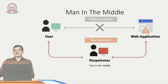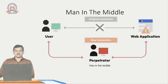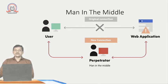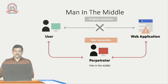Information obtained during an MITM attack could be used for many purposes, including identity theft, unauthorized fund transfer, or illicit password change. To prevent this type of attack, users can avoid freely available WiFi connections that have no password protection, pay attention to browser notifications and report them as malware, immediately log out from secure applications, and avoid using public networks in places like coffee shops or hotels, as there is a chance of sensitive information being stolen.